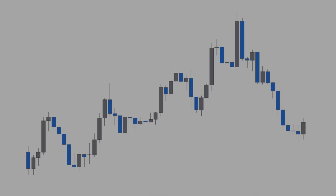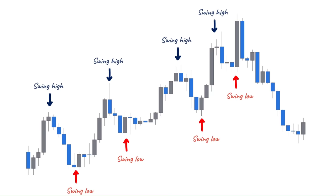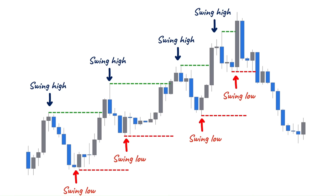Before we start, what is the market structure? When we talk about the market structure, we talk about the swing highs and lows, price movements, and the areas that the market has shown a reaction earlier. We consider all these items part of the market structure and these are the skeletons of the movement.